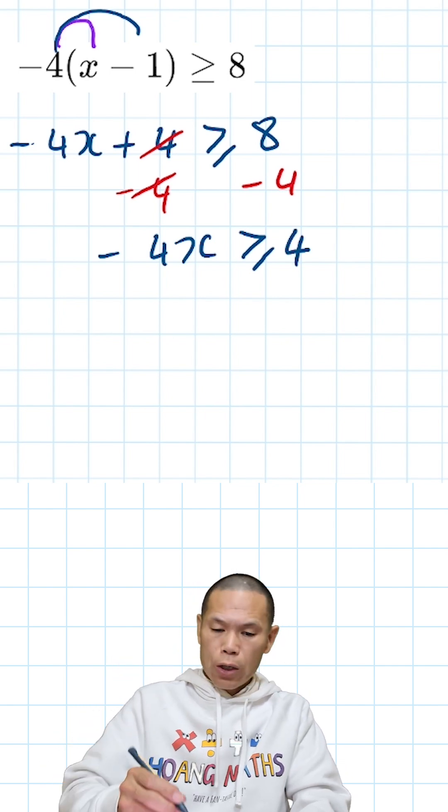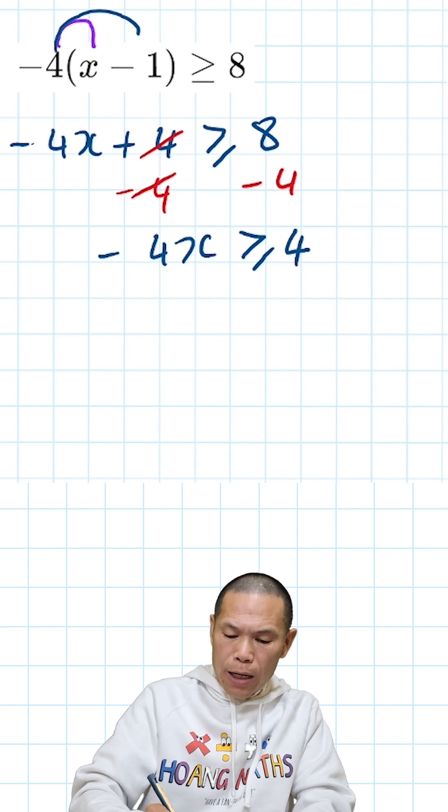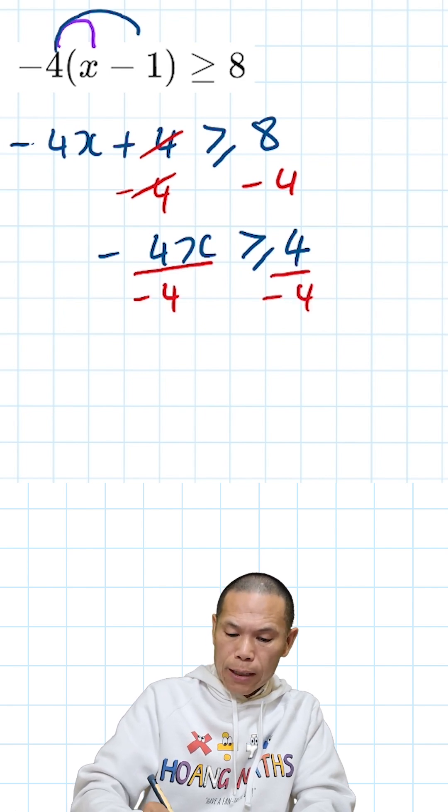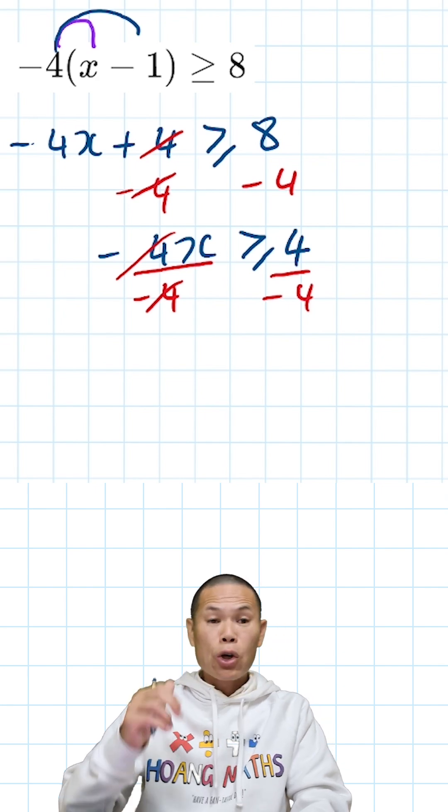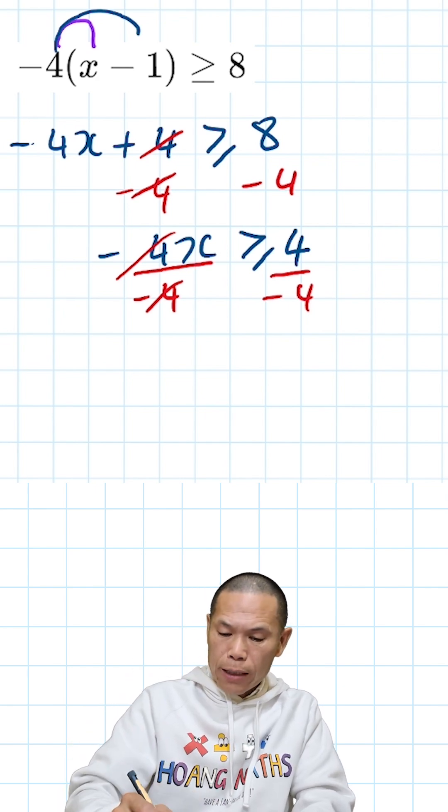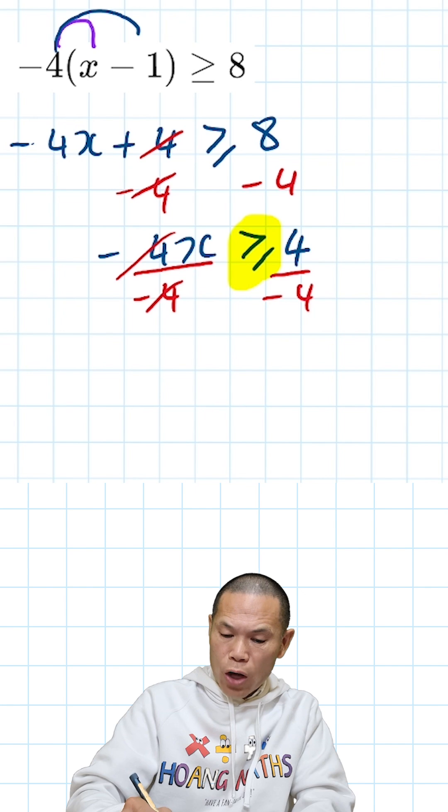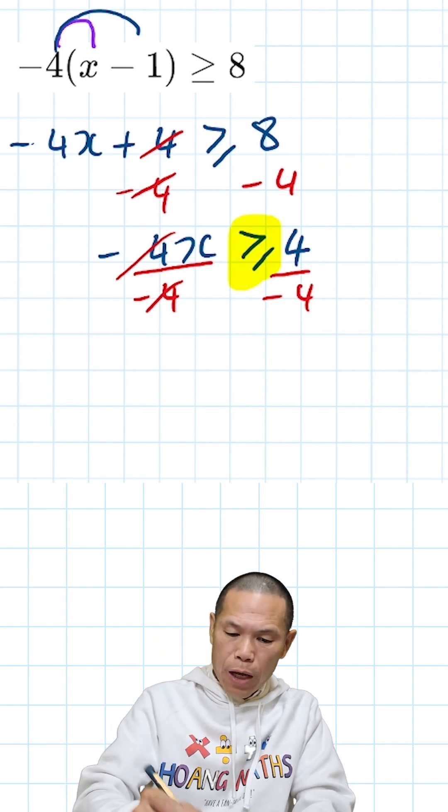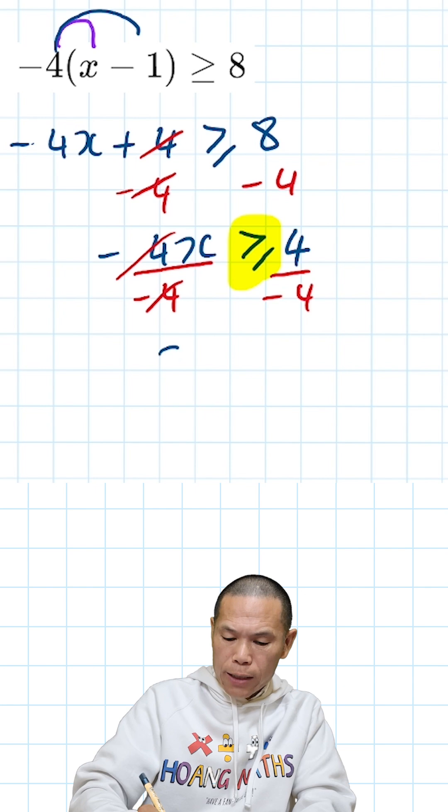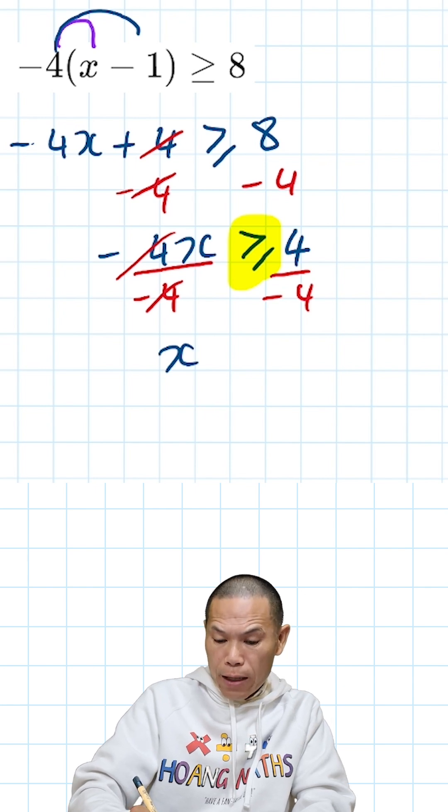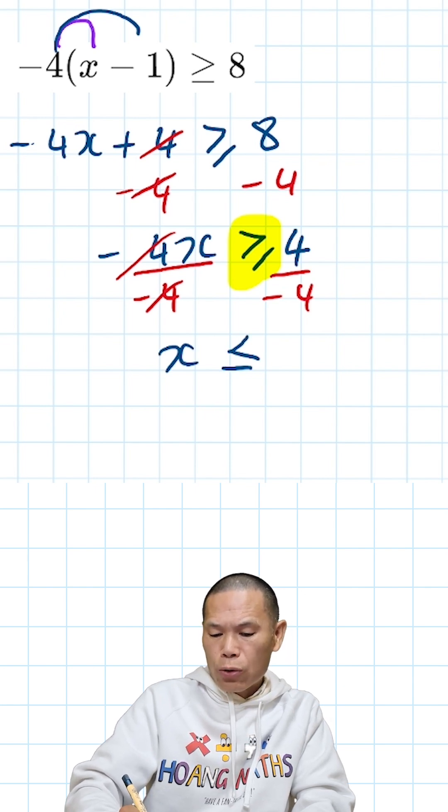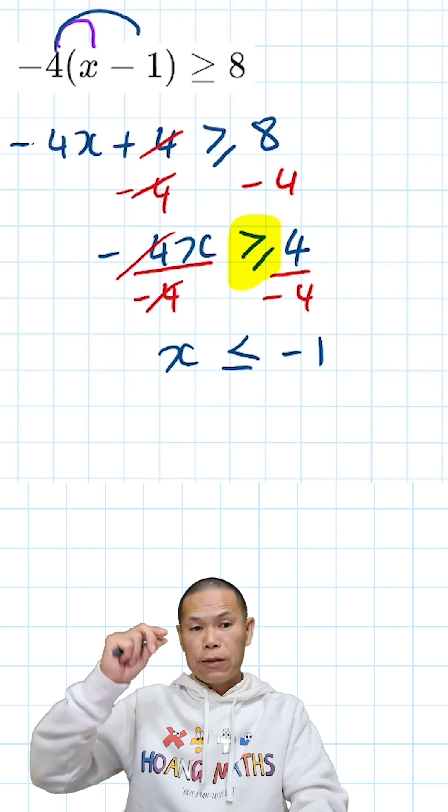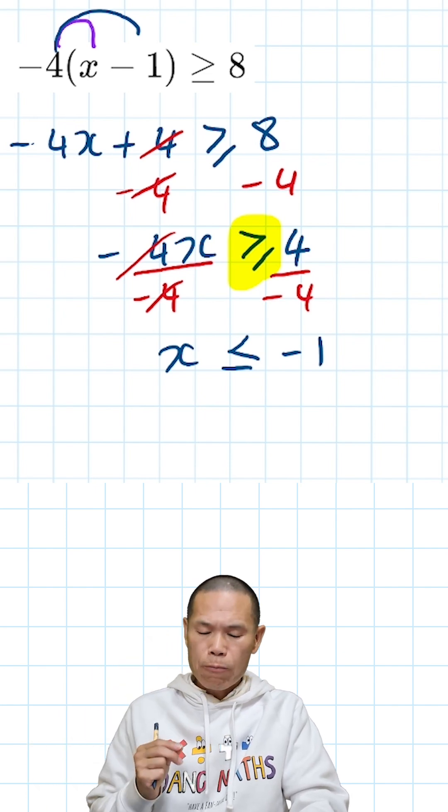Now I divide by negative 4 on both sides. That cancels out. Because I divided by negative 4, a negative number, the sign must be switched around. Keep that in mind. Therefore, x is less than or equal to negative 1, because 4 divided by negative 4 gives me negative 1.